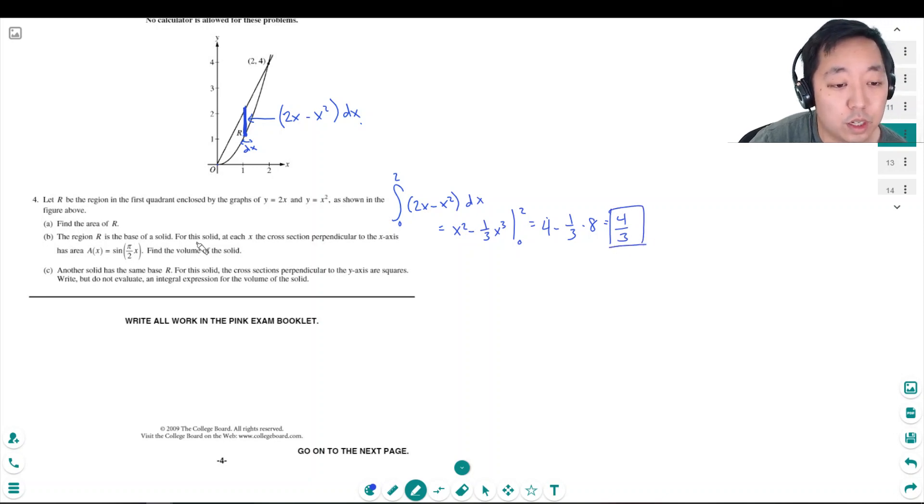Part b: Find the region R as the base of a solid. For this solid, at each x, the cross-section perpendicular to the x-axis has area A(x) = sin(πx/2), and find the volume of that solid. Now I'm gonna make it three-dimensional. At each x, the cross-section perpendicular to the x-axis has an area given by that. So the area of that little vertical shape is A(x).